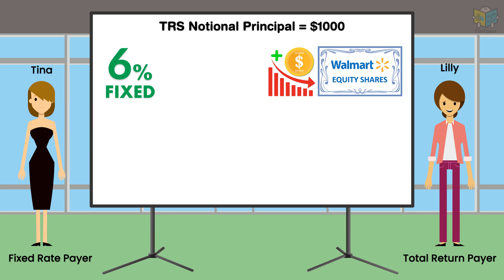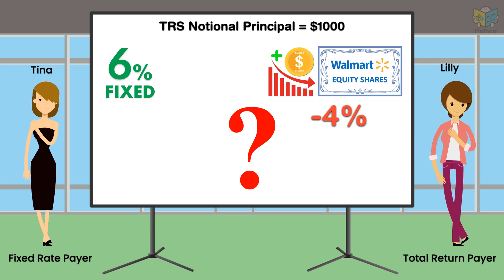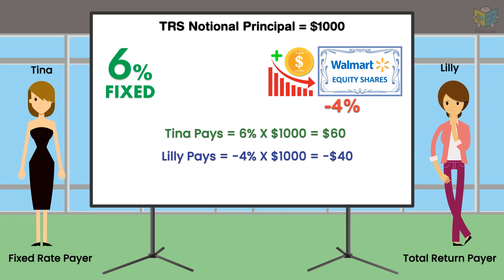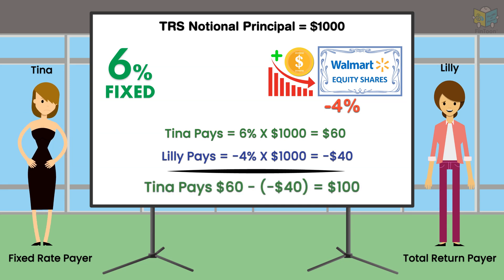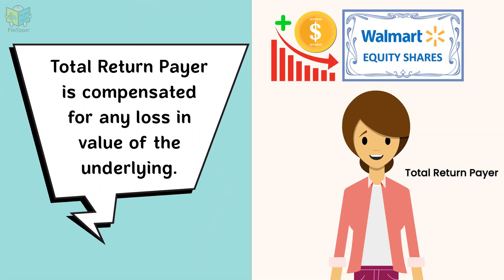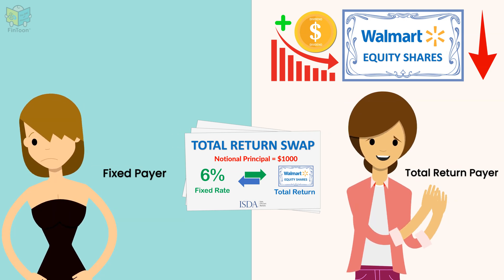Let us now see an interesting scenario. What happens if the share price of Walmart goes down and it generates a negative total return of 4%? Tina has to pay 6%, and Lily has to pay minus 4%. In this case, Tina will have to compensate Lily for her loss, and she will pay 6 minus minus 4%, that is 6 plus 4 or 10%, to settle the swap. Thus, using this swap, Lily is able to mitigate the risk of her equity investment losing its value. If her investment generates a negative return during the year, Tina will compensate her for the loss, along with the fixed rate payment.